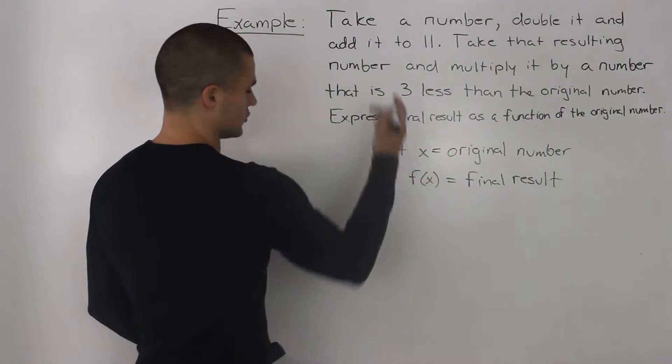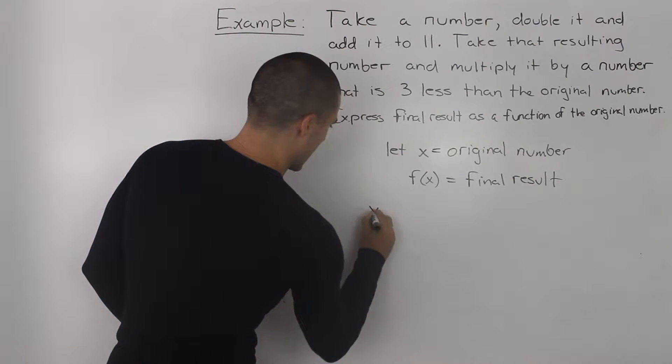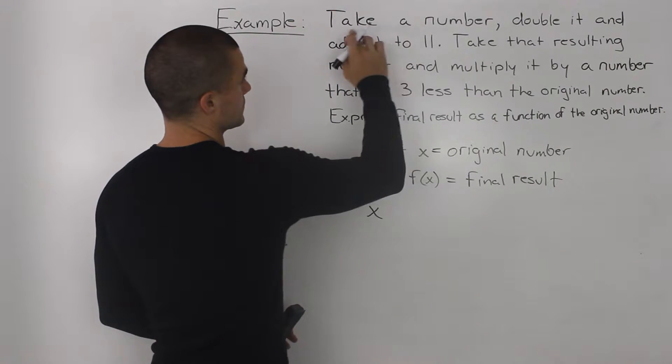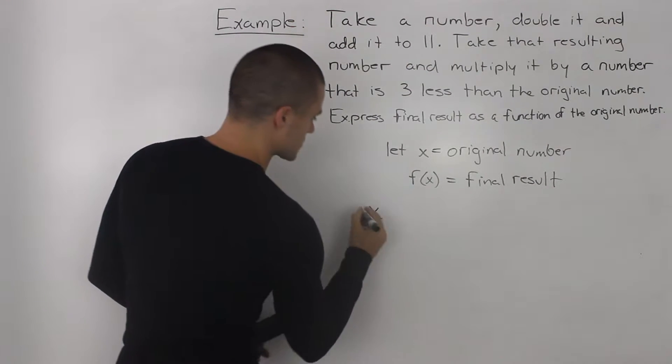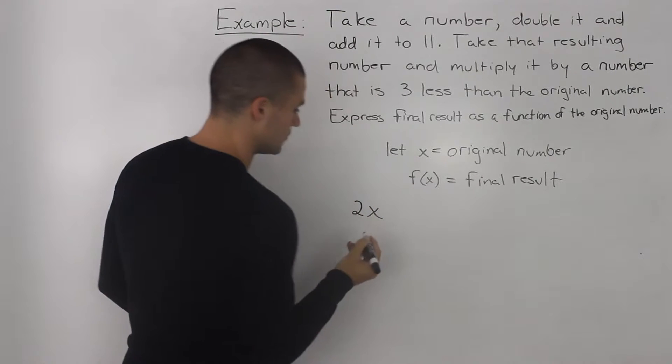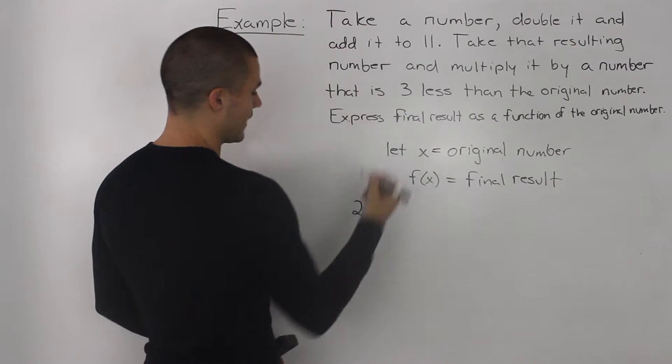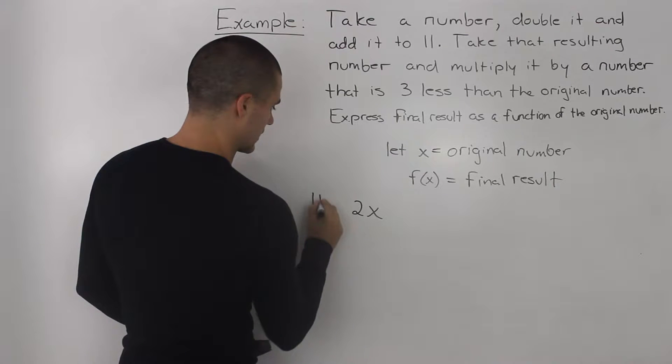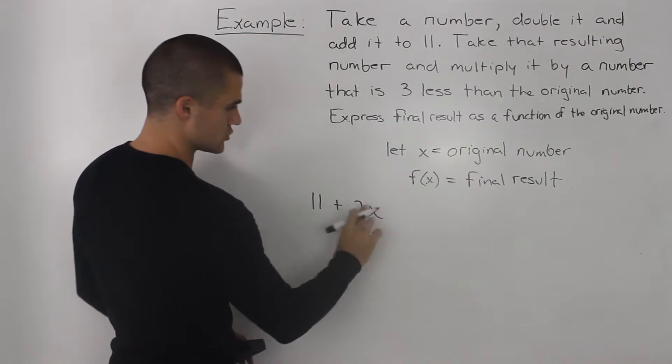So, we start off with the original number, so that's x, and then what are we doing to it? We're taking a number and then we're doubling it, so we're multiplying it by 2, and then we add it to 11. So, we got 11 plus 2x.